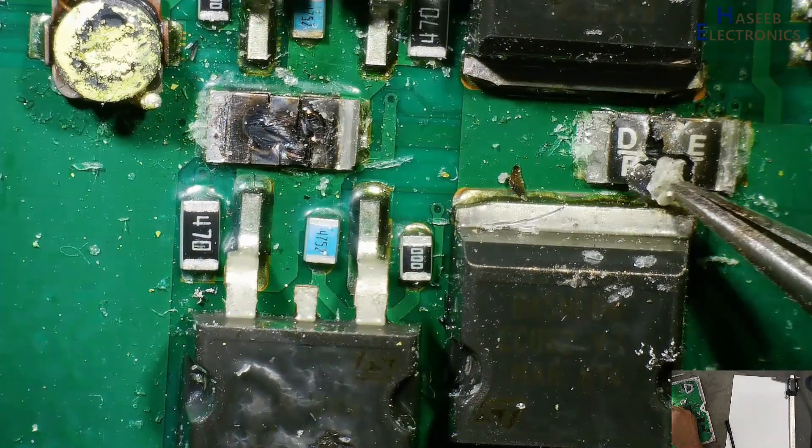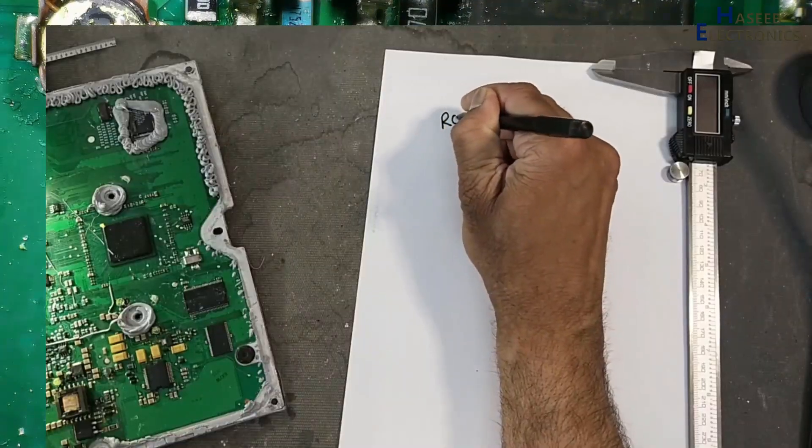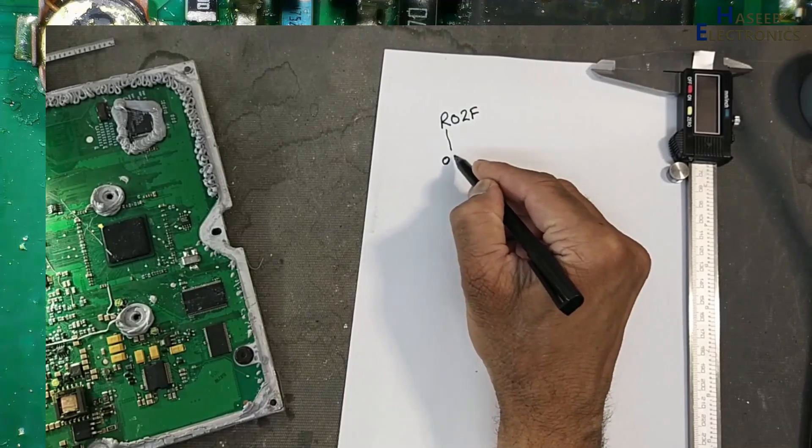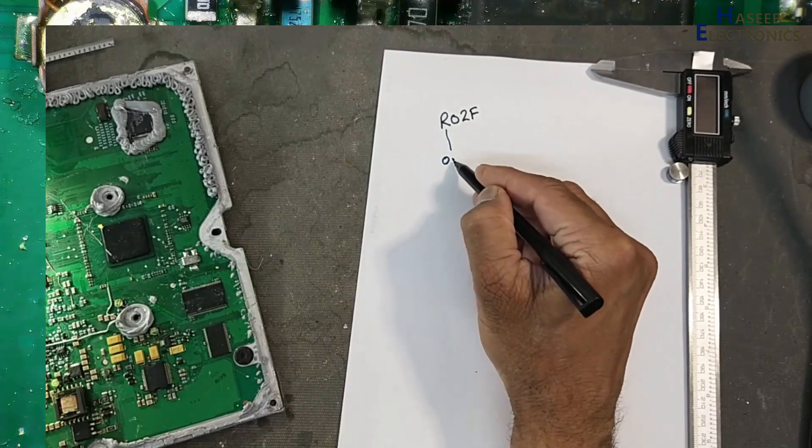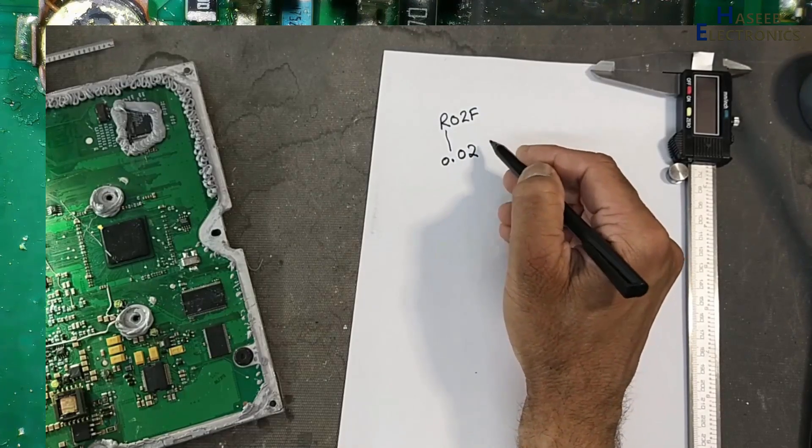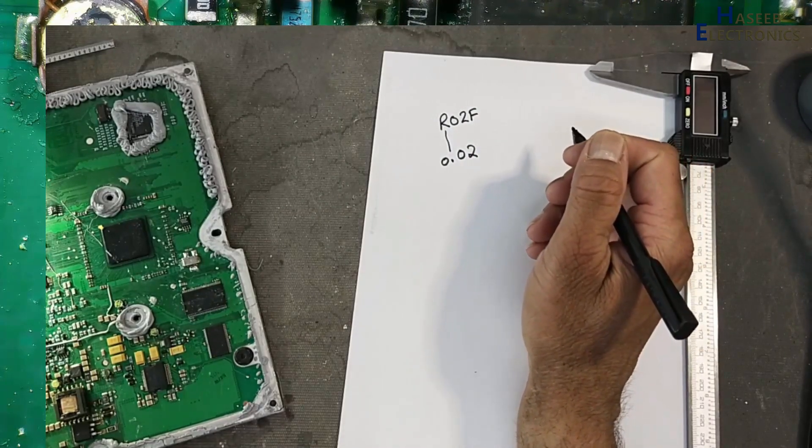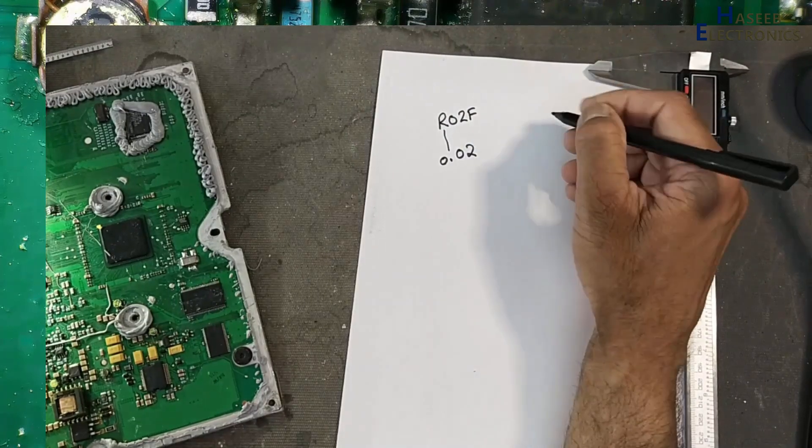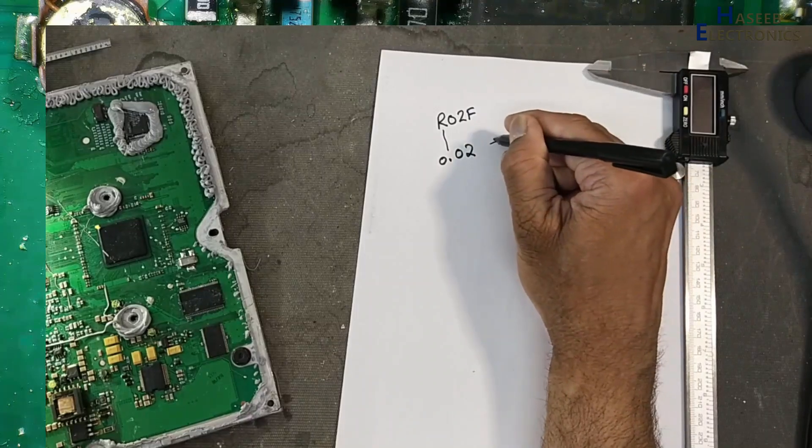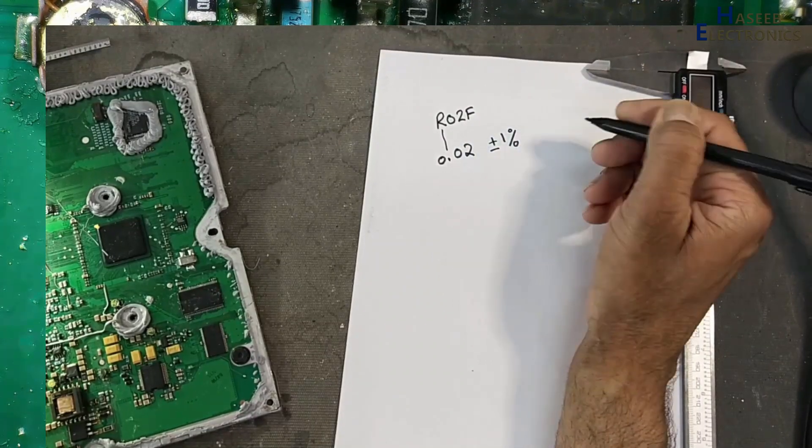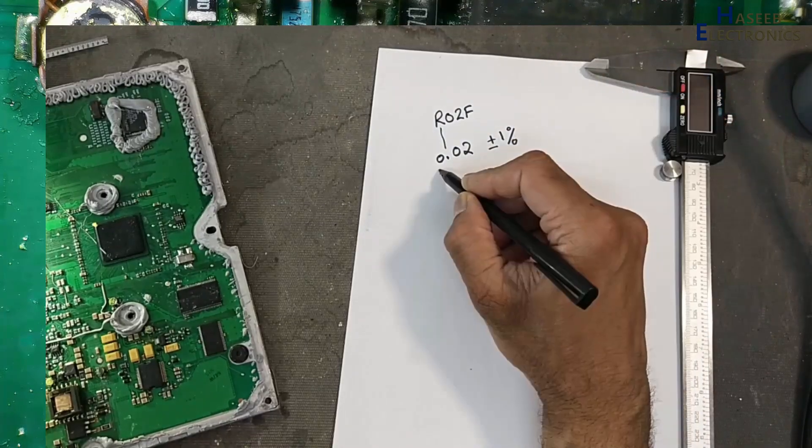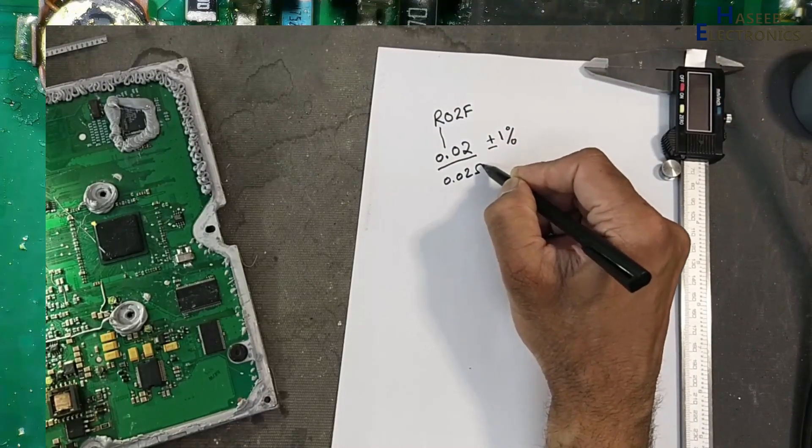It is mentioned here R02F. R means 0.02F, that is percentage. Tolerance. F is tolerance code. If there is D, that is 0.5%, F plus minus 1%. If G, 2%, J, 5%. This is 0.02 Ohms.